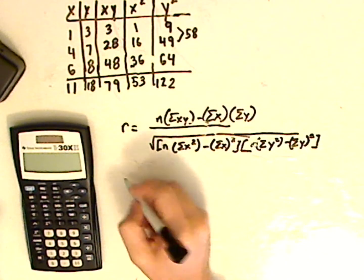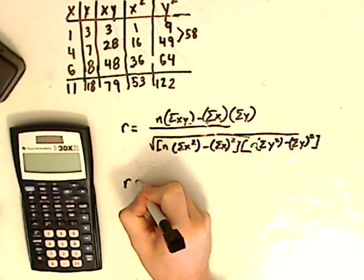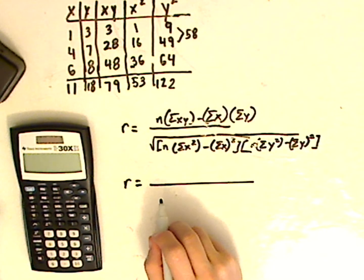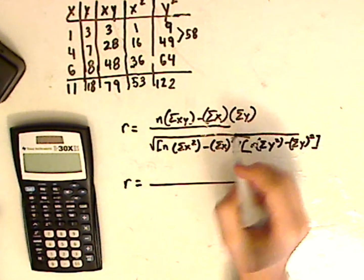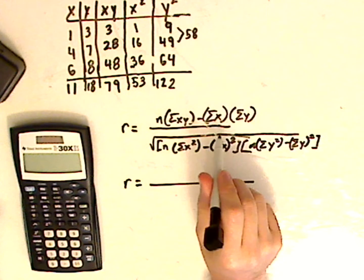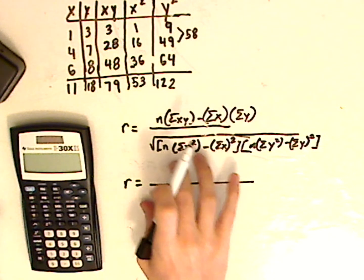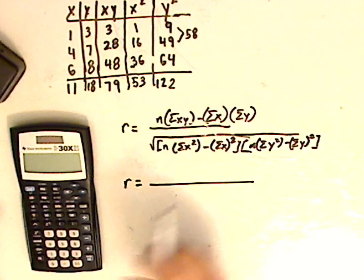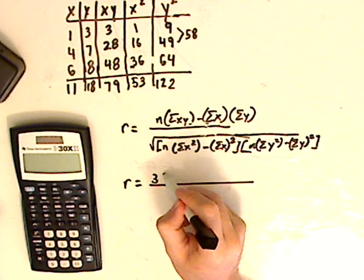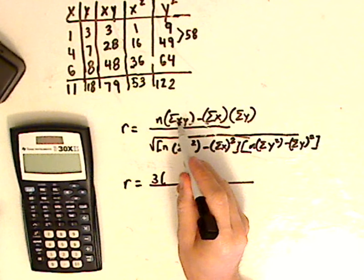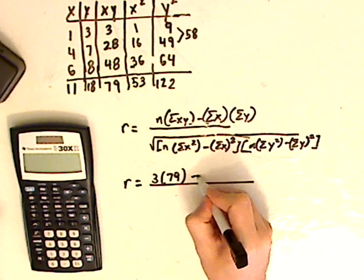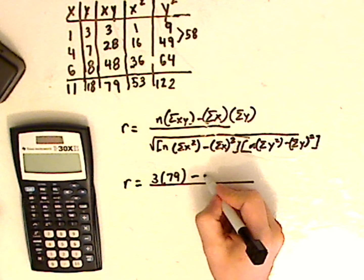Alright, so now take your formula and plug everything in. Now what I like to do is I just like to substitute first, write that and then just plug with the numbers into my calculator. So that's 3, right, because I have 3 points, 3 subjects. Summation of x times y is 79. And I have minus summation of x, which is 11.